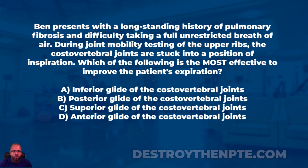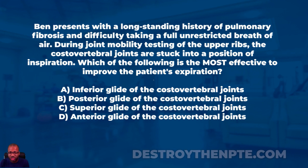For this week's clinical file we have Ben, who presents with a long-standing history of pulmonary fibrosis and difficulty taking a full unrestricted breath of air. During joint mobility testing of the upper ribs, the costovertebral joints are stuck into a position of inspiration. Which of the following is the most effective to improve the patient's expiration? A: inferior glide, B: posterior glide, C: superior glide, D: anterior glide of the costovertebral joints.